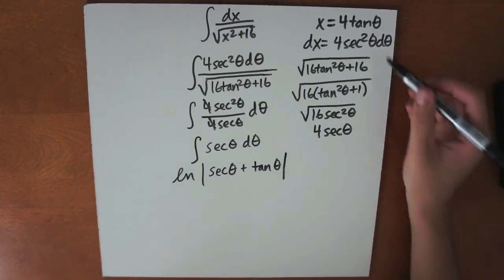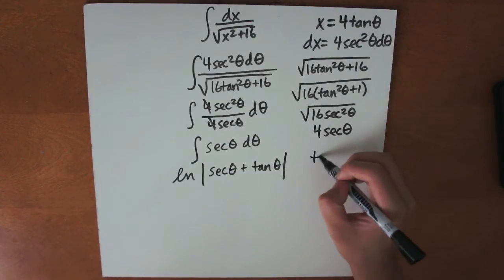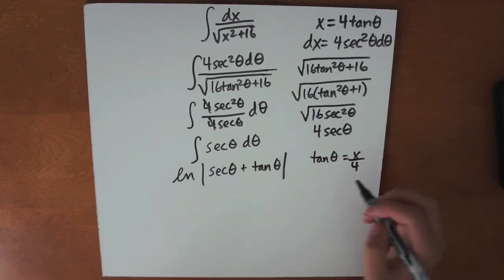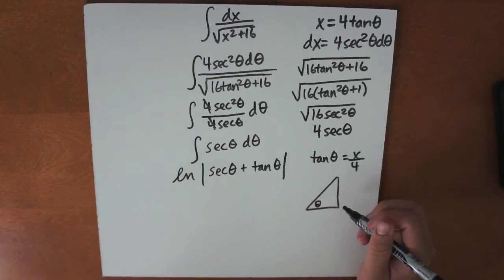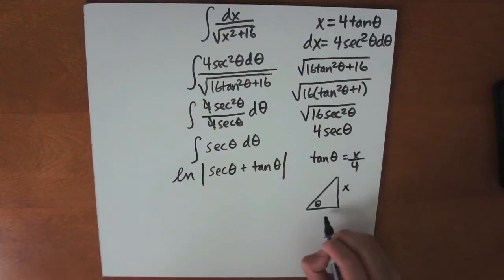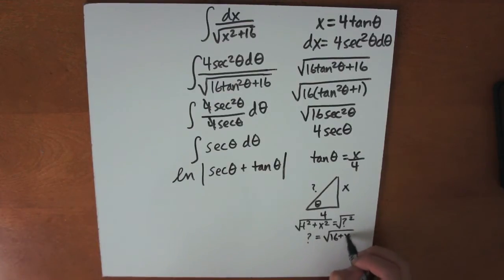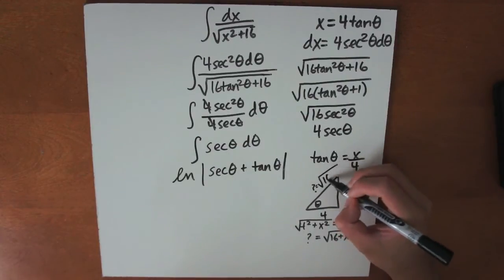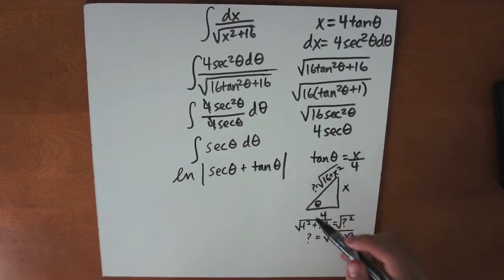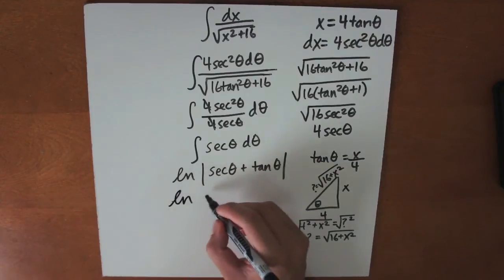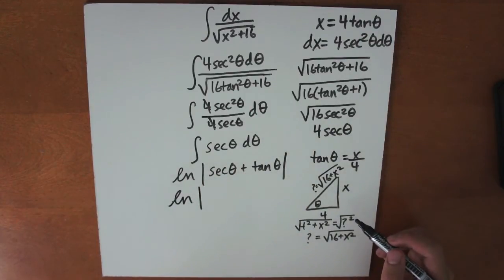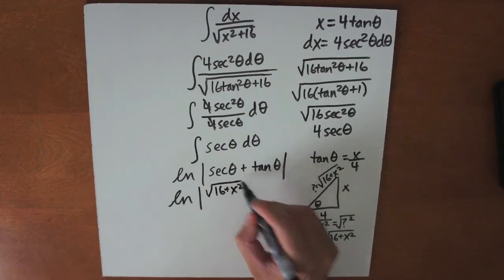Now we must solve the original substitution for the trig function. It becomes tangent theta equals x over 4. We draw a right triangle — tangent is opposite over adjacent, so the opposite side is x and the adjacent side is 4. Using the Pythagorean theorem, the hypotenuse is the square root of 16 plus x squared. So secant theta, which is hypotenuse over adjacent, equals the square root of 16 plus x squared over 4. And tangent theta equals x over 4.